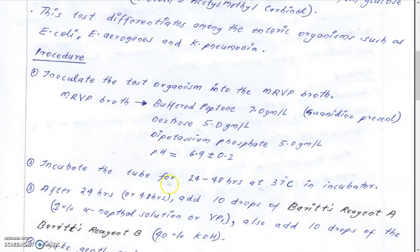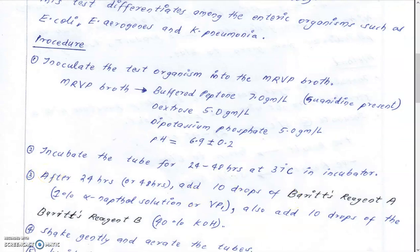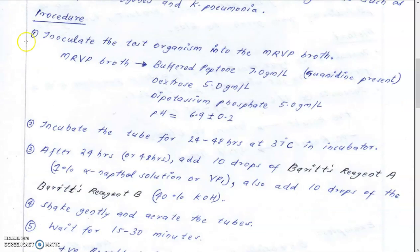Incubate the tube for 24 or 48 hours at 37°C in an incubator. In western countries, 48 hours is preferred for accuracy, while in India 24 hours is commonly used depending on the purpose of the test. After incubation, add 10 drops of Barritt's reagent A, which is a 1% alpha-naphthol solution, also known as VP reagent 1. Also add 10 drops of Barritt's reagent B, which is 40% KOH. KOH acts as a color intensifier, making any color that develops easier to recognize.